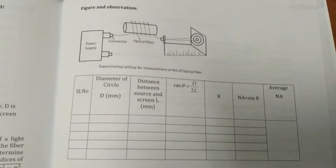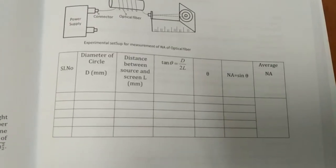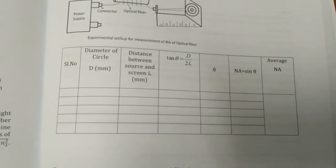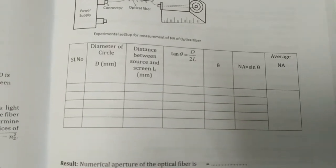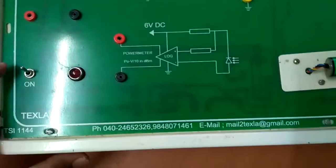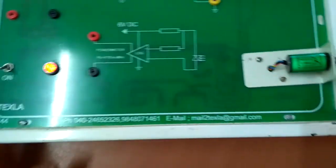We are finding this geometrically. For different concentric circles, if we know the diameter, we just need to find the distance between the source and the screen. So here we switch on the source.